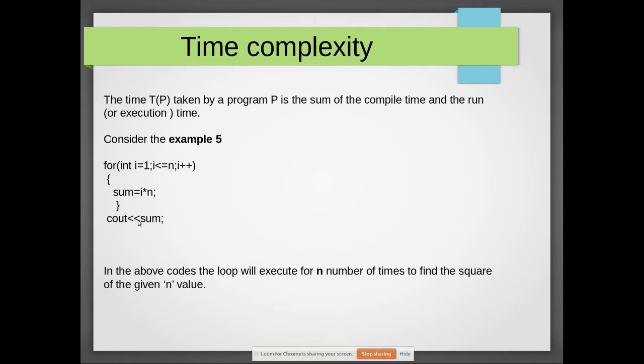For i=1 to n, sum=i×n. This code finds the square of a given number. The final result will be the square of the number. This formula will be executed n number of times. Within the loop, this will be calculated, and finally the answer will be printed on the screen using the cout statement.